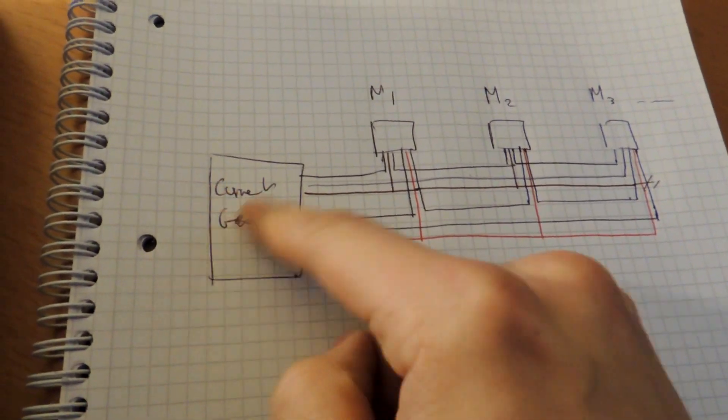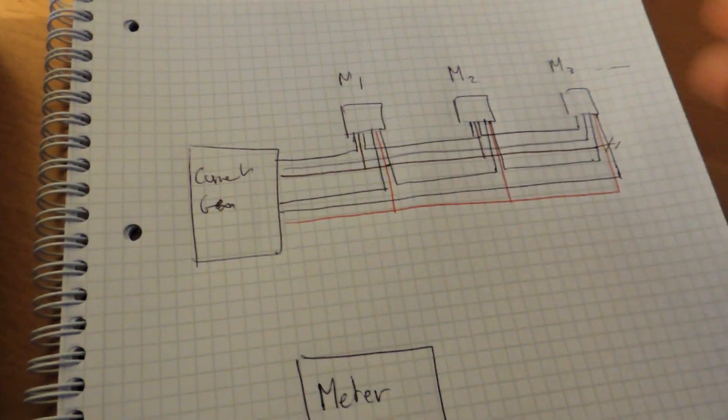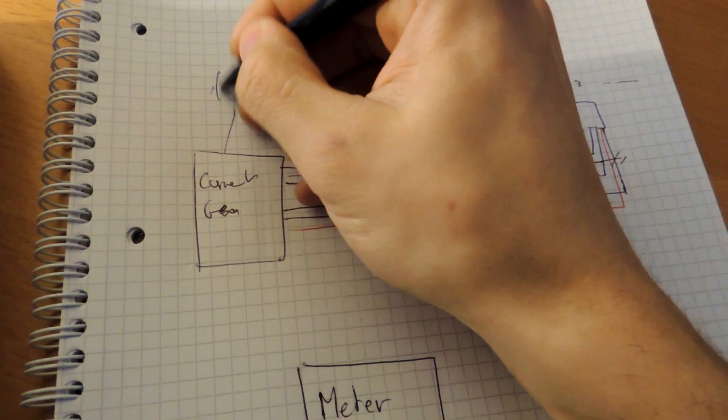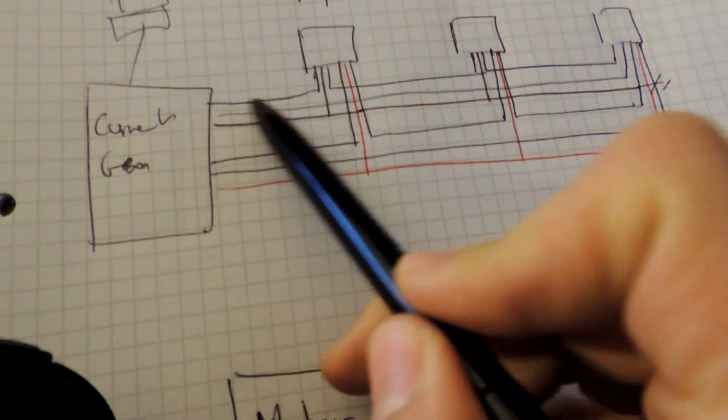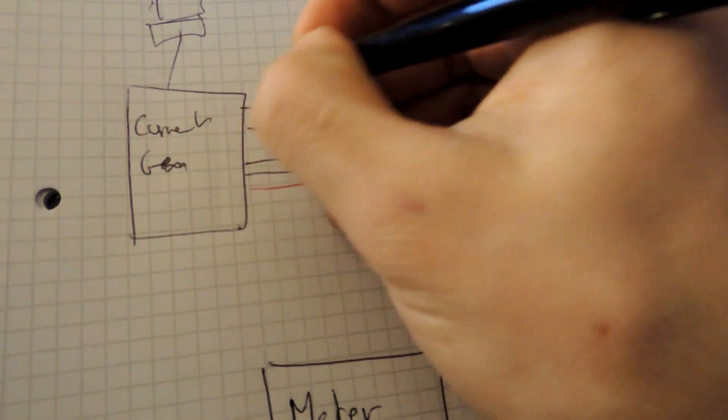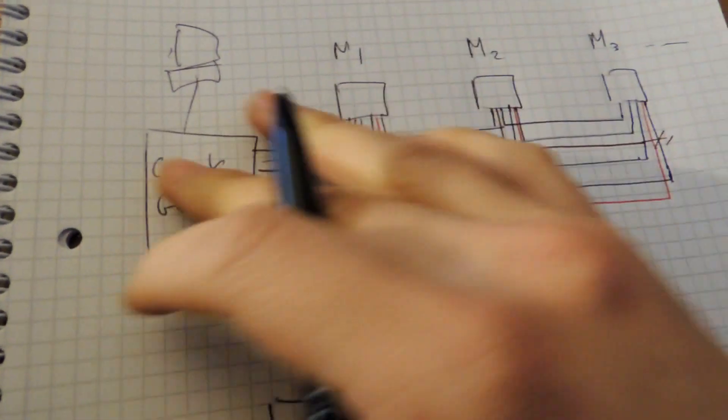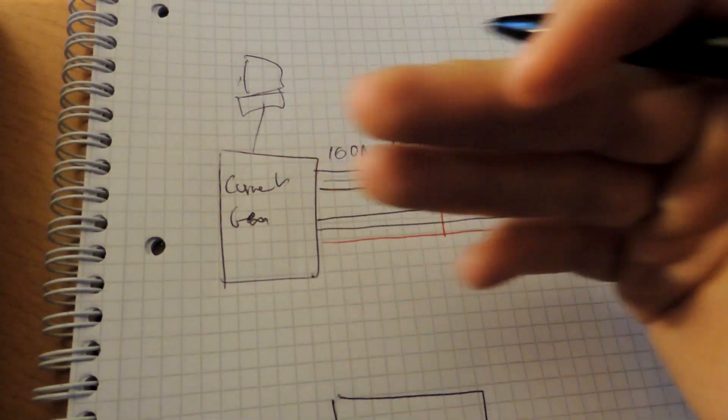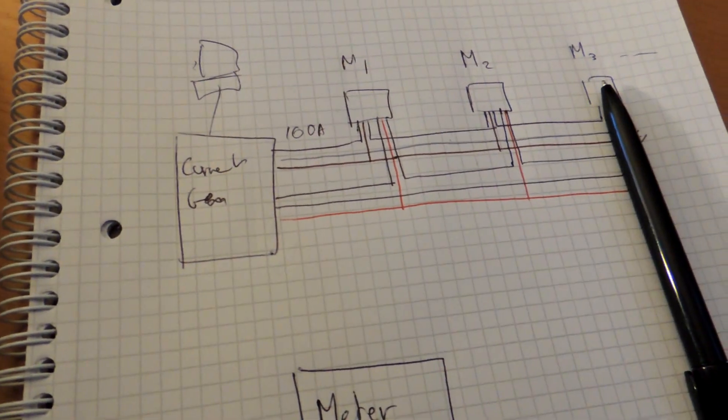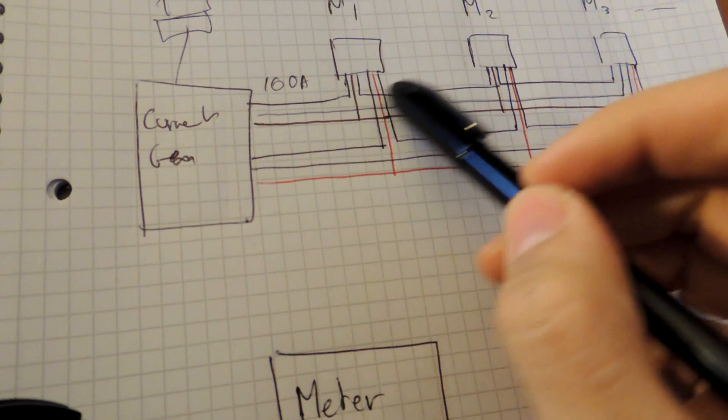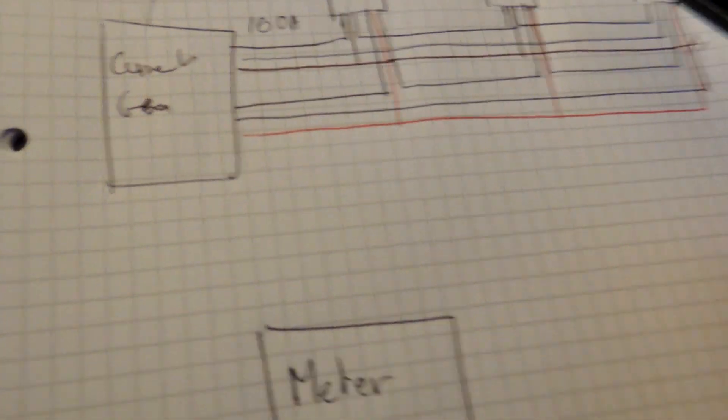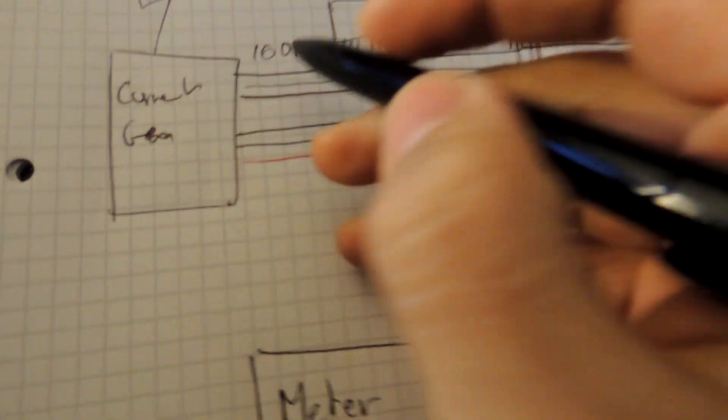And you've got the current generator hooked to a computer. So there you've got a computer, and the current generator makes current like 100 amps. You've got all the program that does different currents and different voltages, but the thing is that it makes 100 amps there.